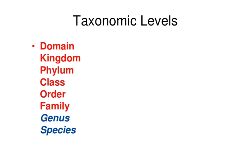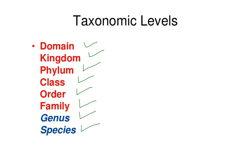There are hierarchical taxonomic levels used to classify all living organisms. There are three domains and six kingdoms in the biosphere. From broadest to most specific, the levels are: Domain, Kingdom, Phylum, Class, Order, Family, Genus, and Species — going from more crowded and general to more specific.